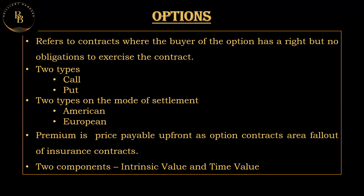There are two types of options in terms of settlement: the American option and the European option. American options can be exercised at any time before or at the expiration date — most options traded in the US are of the American type. European options can be exercised at the expiration date only, and are commonly used for index options and options on futures contracts.